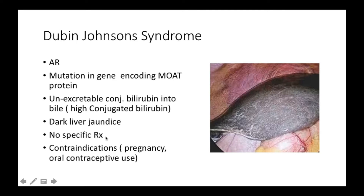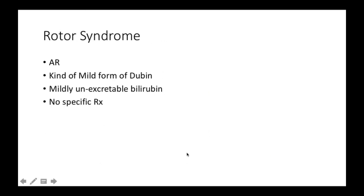With Dubin-Johnson syndrome, there's also no specific treatment prescribed for the patient. However, there are certain contraindications — some of which include pregnancy or contraceptive use — so you should advise the patient against those.